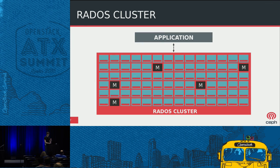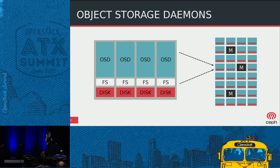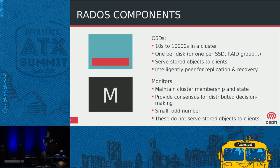Within the RADOS cluster you have a whole bunch of servers. Some of them will be monitors — those are the M's — and then you'll have OSDs or object storage daemons. An object storage daemon is a regular Linux process running on top of a Linux file system on top of a disk. There are experimental backends going on that strip out the Linux file system entirely and just run on the disk directly. Within the cluster you'll have tens of thousands of OSDs. Unlike many clustered storage systems, each OSD is intelligent and works together to maintain the replication and consistency of objects.